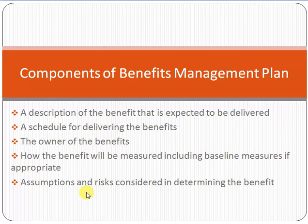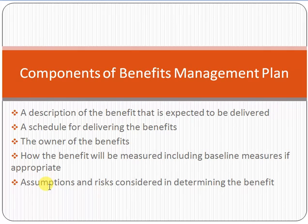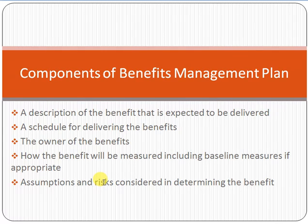The benefit management plan also describes the assumptions and risks considered in determining the benefit. Assumption means anything which you are assuming that could be wrong — for example, assuming that an internet connection will be available at a bank. Risk means something that could have a positive or negative impact on the project. Both assumptions and risks are determined in the benefit management plan.